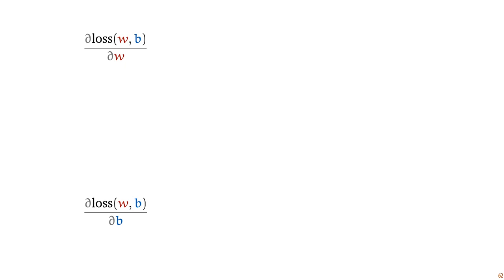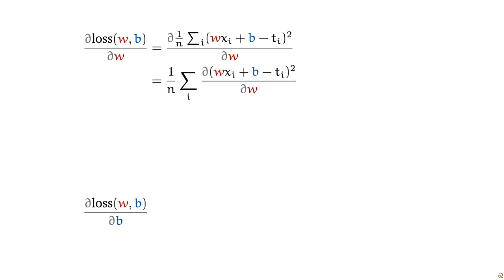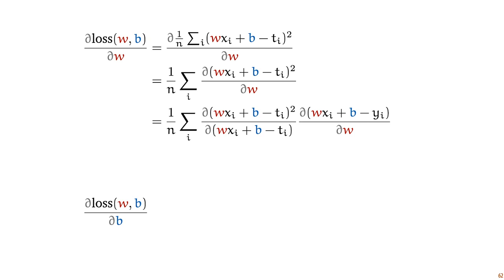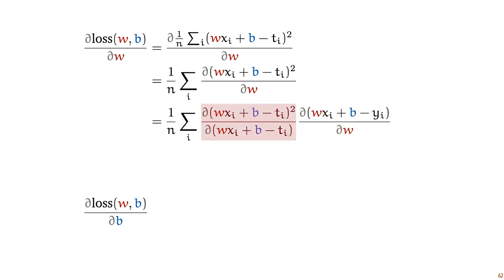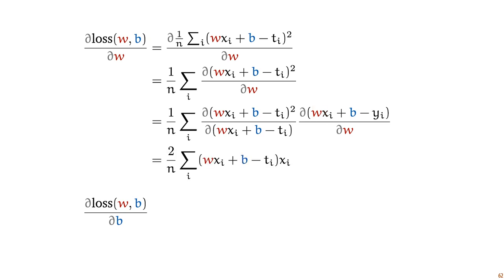Starting with the derivative with respect to w: if we fill in the definition of the loss, we can move the constant factor 1/n and the summation symbol out of the derivative. So now we're looking for n separate derivatives, one with respect to each instance in our data. To deal with the square, we apply the chain rule: the derivative of this whole function is first the derivative of the square with respect to the thing we're squaring, times the derivative of the thing we're squaring with respect to w. The first factor boils down to moving the 2 out in front of the expression. And since w only occurs in the term xi multiplied by w, we remove w and are left with xi.